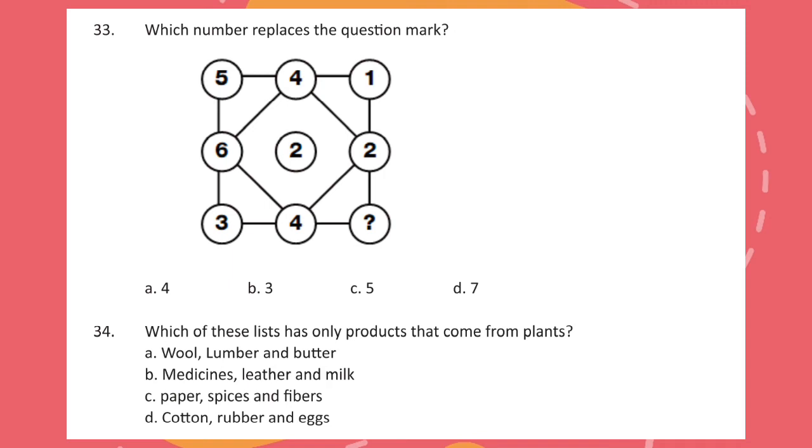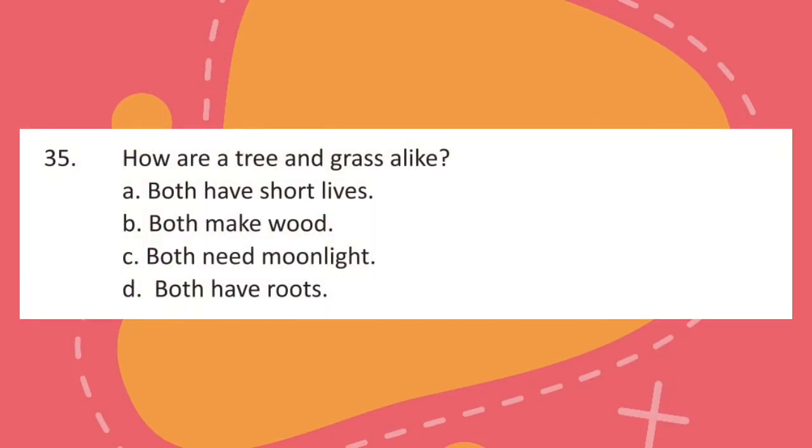Question 34: Which of these lists have only products that come from plants? Question 35: How are a tree and grass alike?